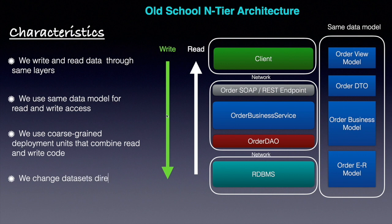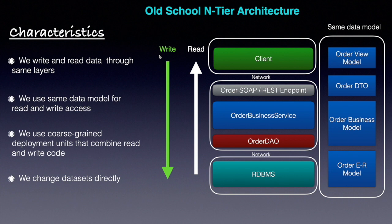The fourth characteristic is we change datasets directly. If we want to change a specific column value in a row, we directly change the value and commit. After the commit, the old value is gone — you never know the old value from an application perspective. Yes, we have built many applications using this architecture for the last two decades and proven successful. But there are some drawbacks to building systems for different use cases following this N-tier architecture.